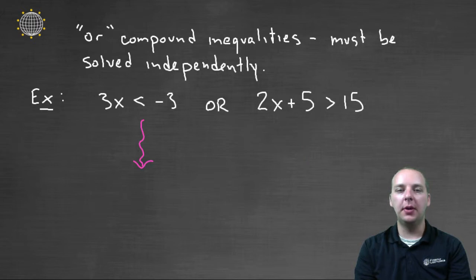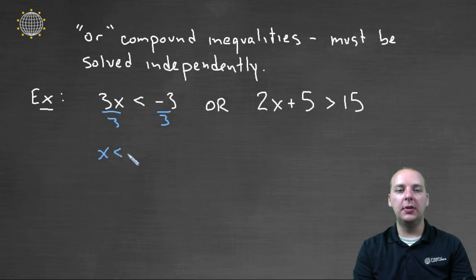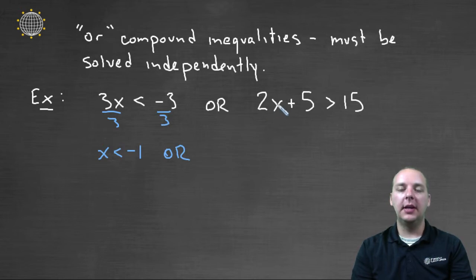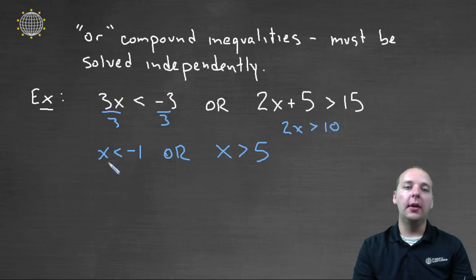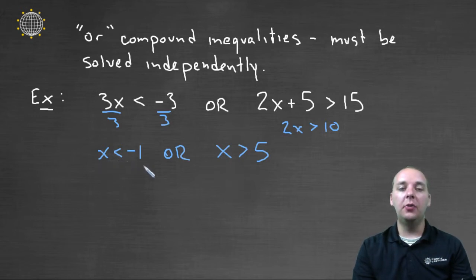Let's try it with this example. If we solve for x in the first inequality, we divide both sides by three and get x strictly less than negative one. Then OR — if we solve for x in the second inequality, we subtract five from both sides and get two x strictly greater than ten, then divide both sides by two to get x strictly greater than five. So you can't have an x that's both less than negative one and greater than five, but you could easily have x's that are less than negative one or greater than five. This is how we leave our OR compound inequalities.